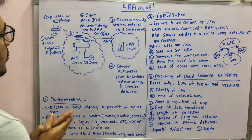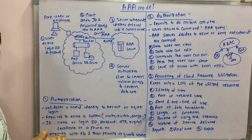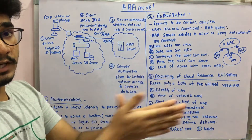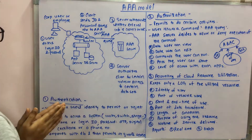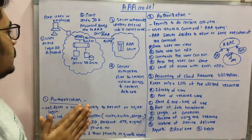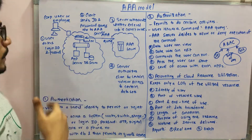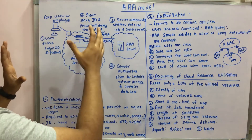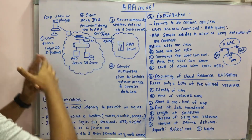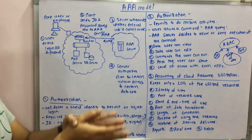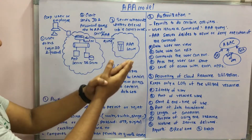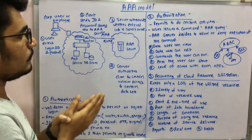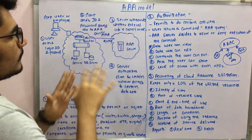We have this basic diagram. AAA stands for Authentication, Authorization, and Accounting of the Utilized Resources. The setup has a user or corporate employee, a cloud system with a router, two components — App Server and DB Server — and finally the AAA Server, which is kept outside the network.